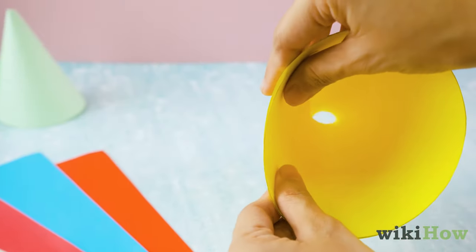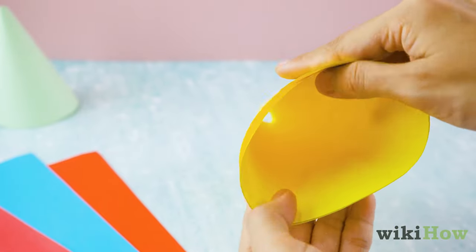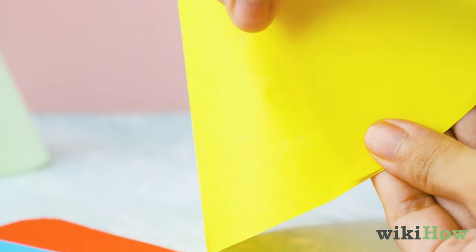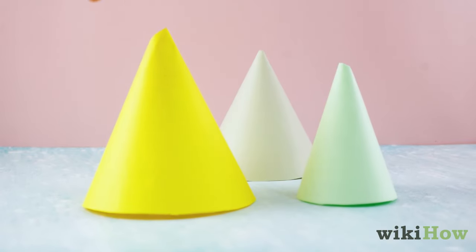The more you overlap the ends, the smaller your cone hat will be. Finally, adjust the cone so it fits your head, then staple or tape the ends together at the base.